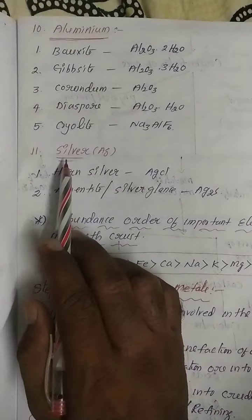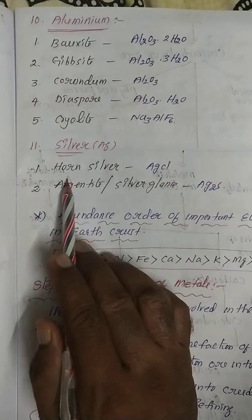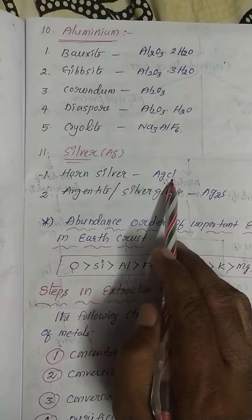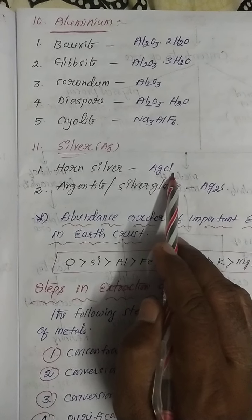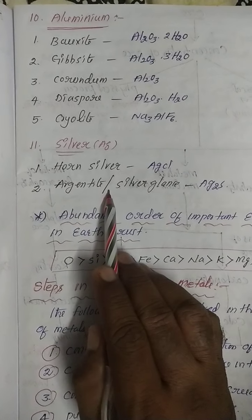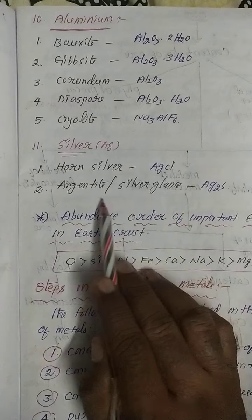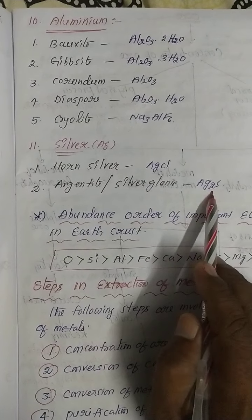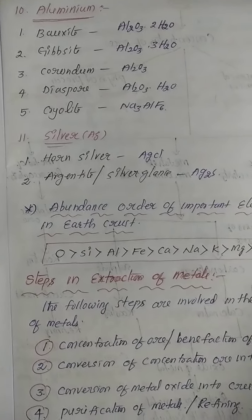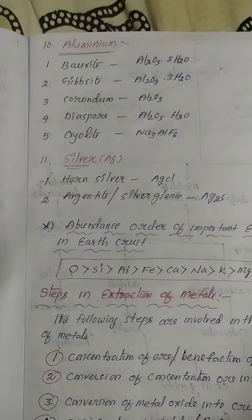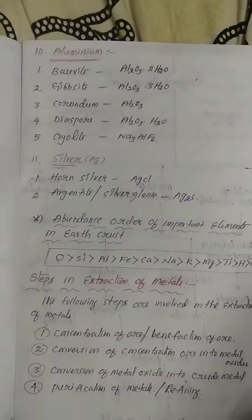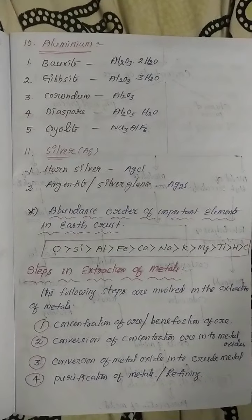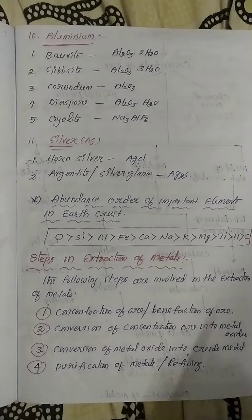For silver, the important ores are: horn silver — silver chloride (AgCl) — and argentite or silver glance, which is Ag₂S. These are the important minerals of silver.